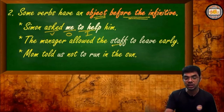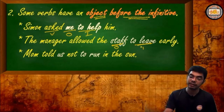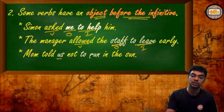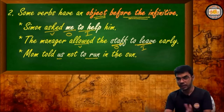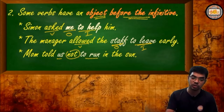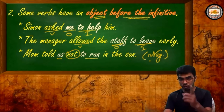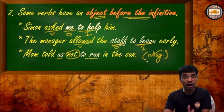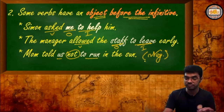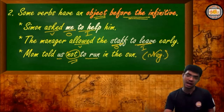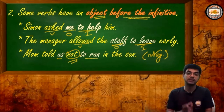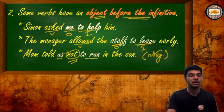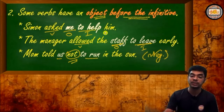Another example: 'The manager allowed the staff to leave.' Here 'the staff' is the object and 'to leave' is the infinitive. In the next sentence: 'Mom told us not to run in the sun.' The same structure is followed, but notice the negative 'not.' Before the infinitive we place 'not.' This is how an object may appear between the verb and the infinitive — that is our second rule.